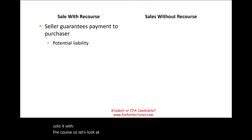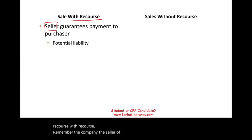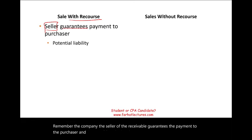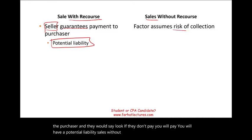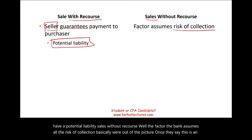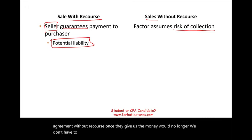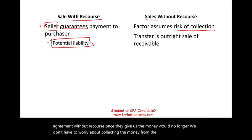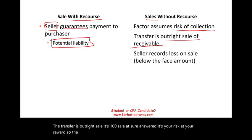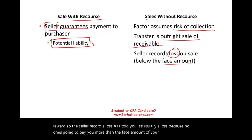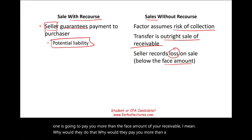With recourse means the seller of the receivable guarantees payment to the purchaser, saying 'if they don't pay you, we'll pay you' — creating a potential liability. Without recourse means the factor or bank assumes all the risk of collection; once they give us the money, we no longer have to worry about collecting from the customer. The transfer is an outright sale — it's your asset, your risk, your reward — and the seller records a loss, since no one will pay more than the face amount of the receivable.